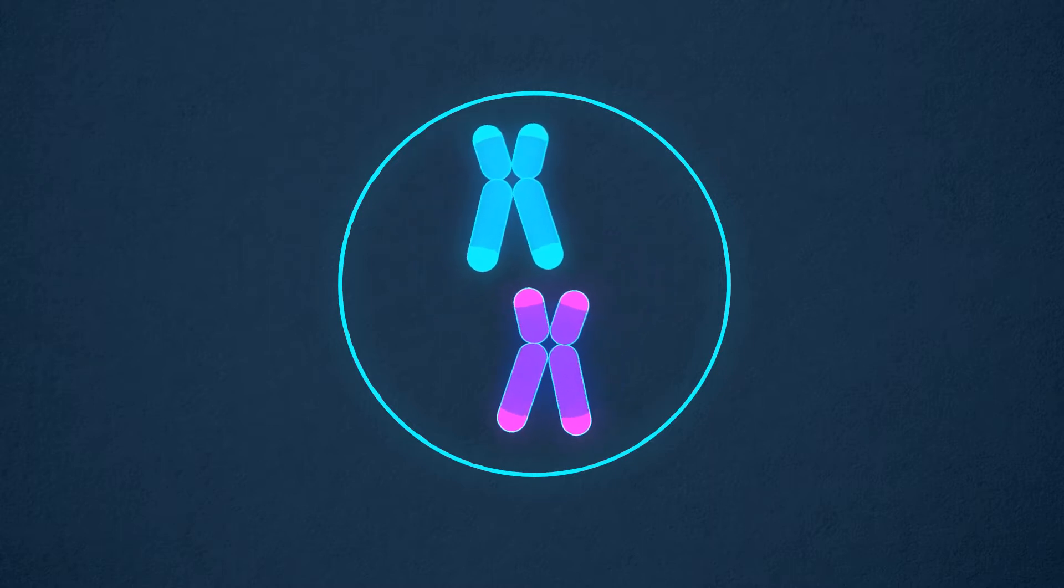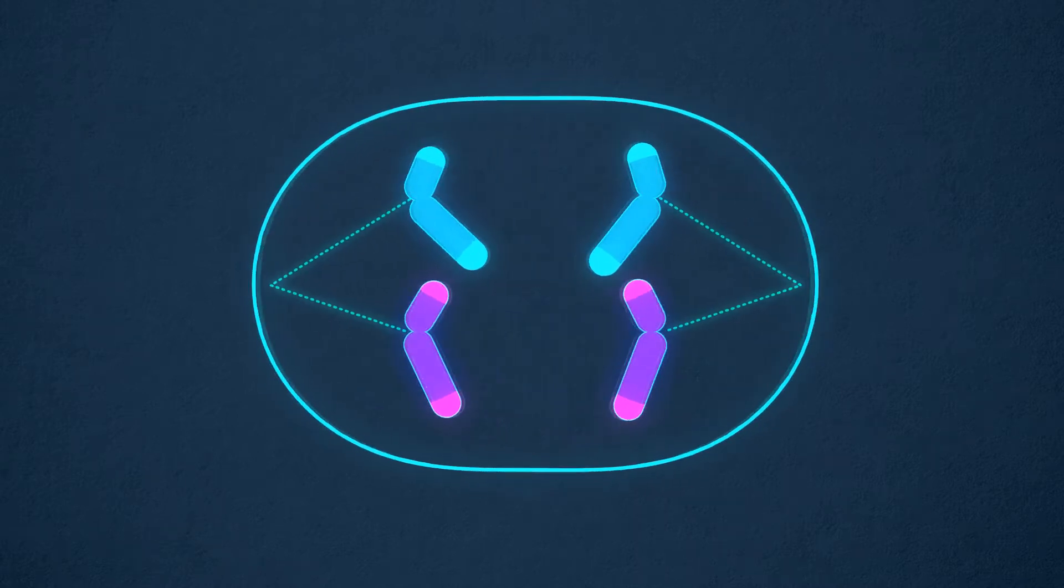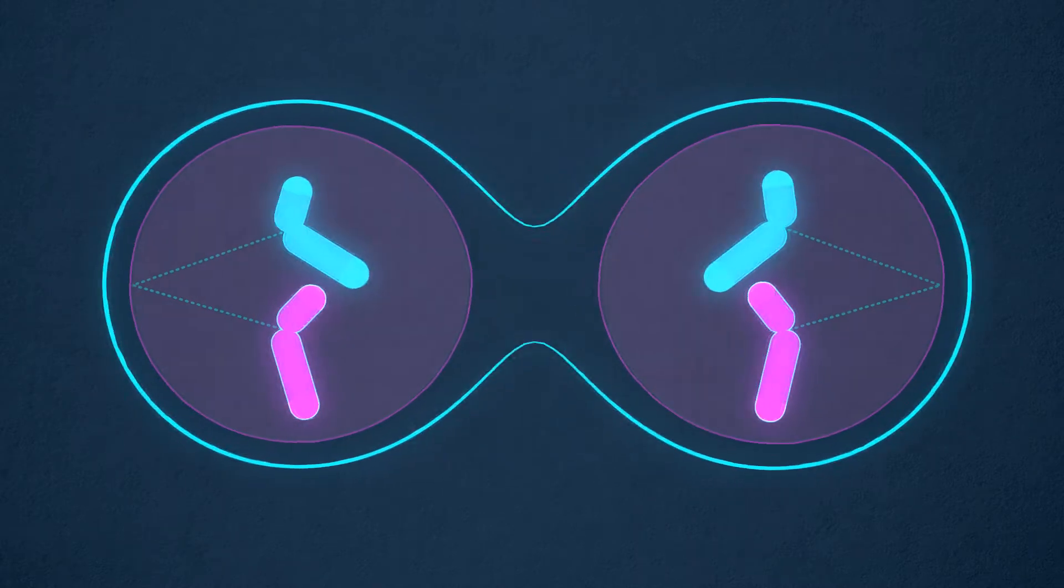Newly copied chromosomes must wait attached until they are all perfectly aligned at the cell division plate. That's when they will be pulled apart by the centrosomes to form two new cells.